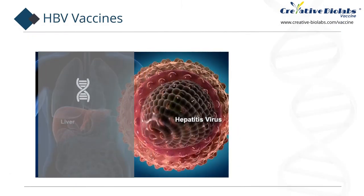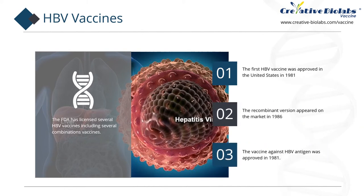The FDA has licensed several HBV vaccines including several combination vaccines. The first HBV vaccine was approved in the United States in 1981, and the recombinant version appeared on the market in 1986. It is among the most effective and safe drugs required for health systems and is on the list of essential medicines of the World Health Organization. In 1963, American geneticist Baruch Blumberg discovered the Australian antigen, now known as HBsAg, in the serum of Aboriginal people in Australia. In 1968, virologist Alfred Prince found that the protein was part of a virus that caused serum hepatitis. Merck's microbiologist Maurice Hilleman developed a product that could be used as a safe vaccine using three methods of strict filtration, and the vaccine was approved in 1981.